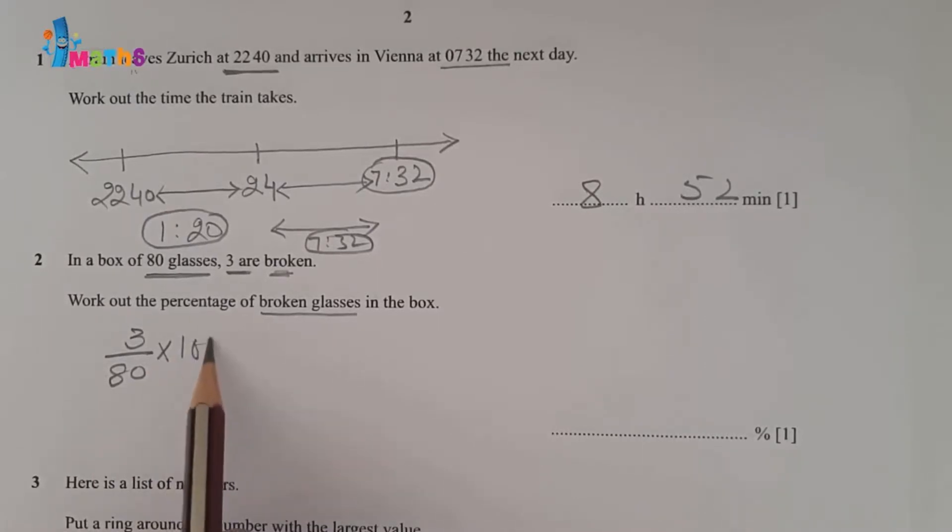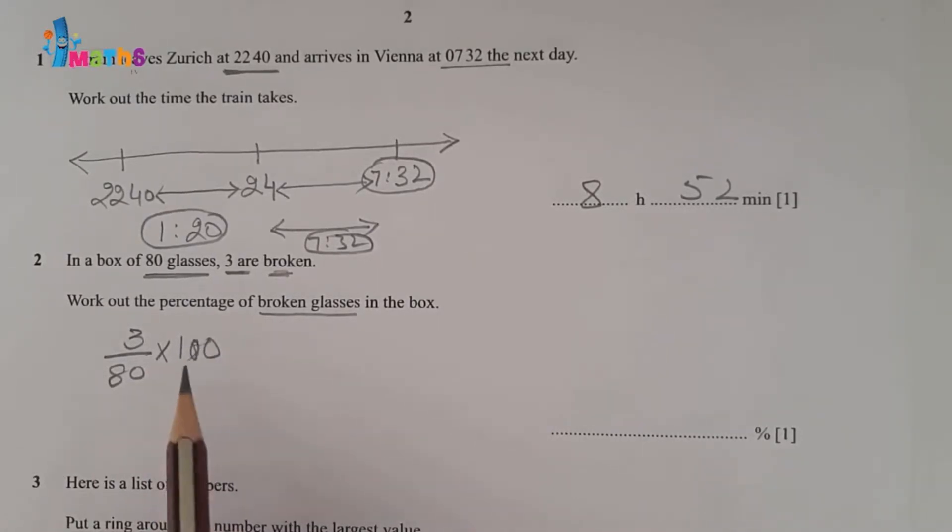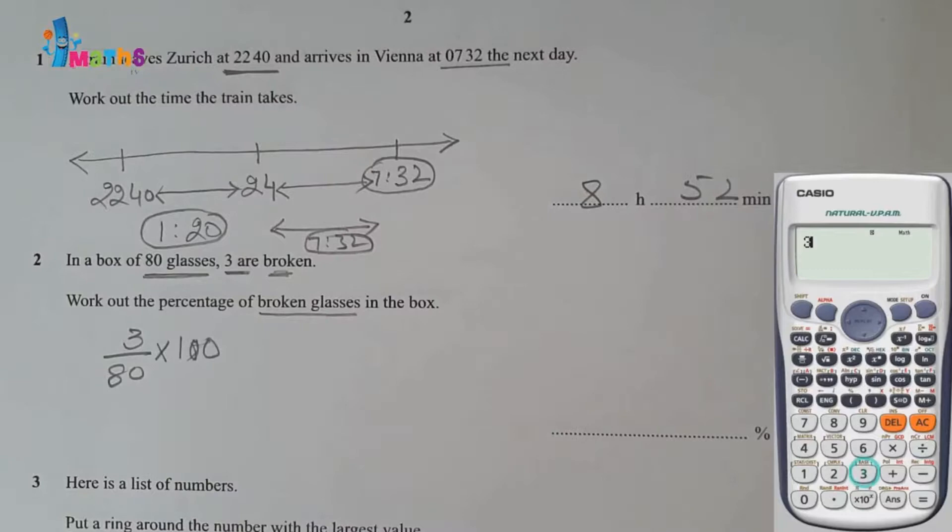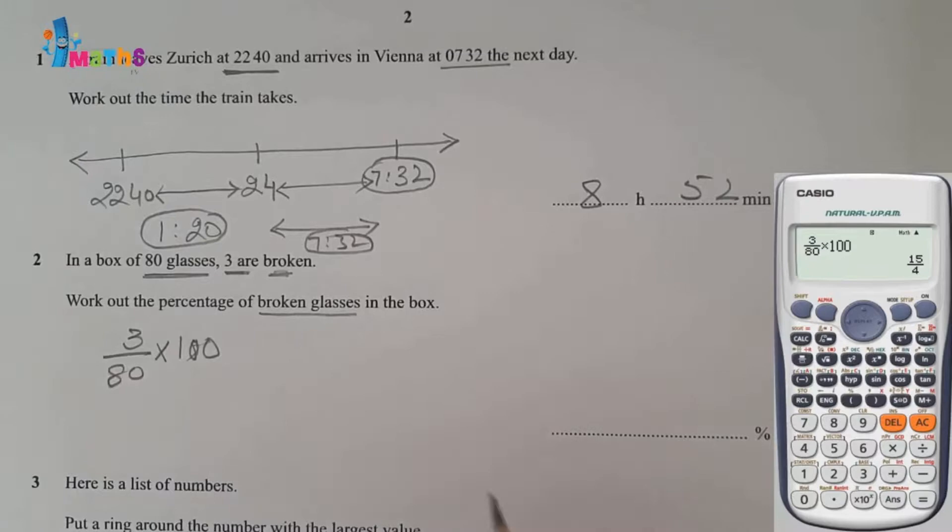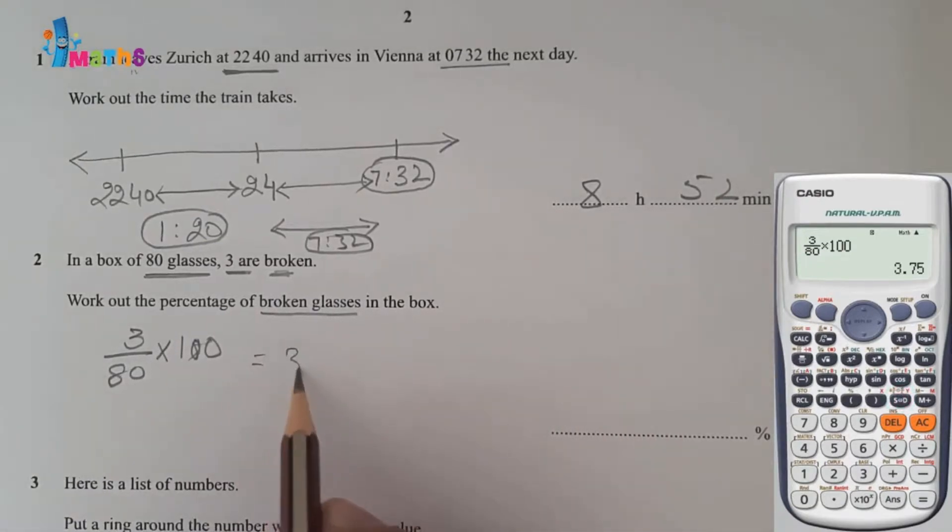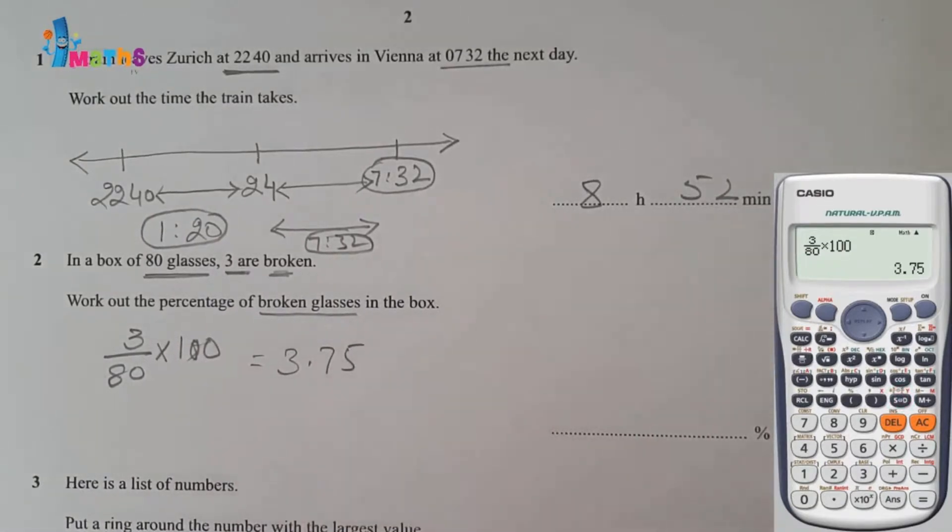Multiply by 100 for percentage. We can calculate by calculator: 3 divided by 80 multiply by 100 will be equal to 3.75. So we can write 3.75 percent.